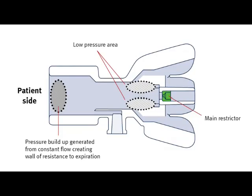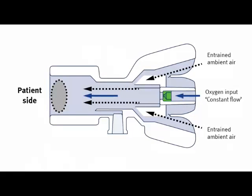This in turn causes the pressure to drop and allows for ambient air to be entrained into the chamber and mixed with oxygen. By varying the oxygen flow through the vectored flow valve, the baseline pressure can be raised or lowered to maintain a constant airway pressure.